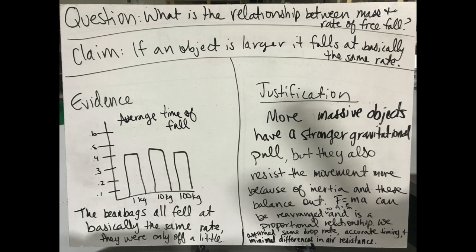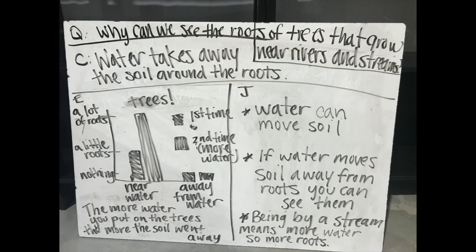At some point, students will start working toward whiteboards that have the analysis and interpretation in the evidence box, and their justification box will be focused on the science. At this point, it becomes all about meeting students where they are, and one of the most successful ways to do this is to highlight great things that you see on certain boards.